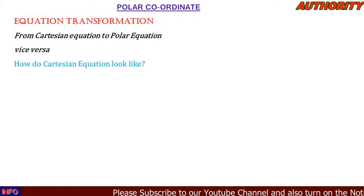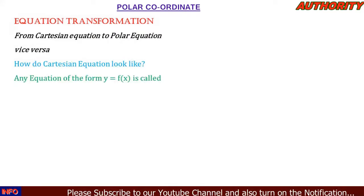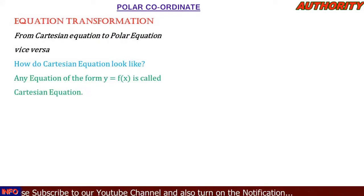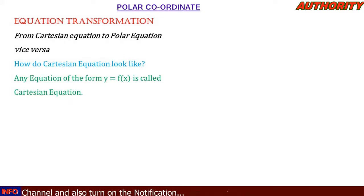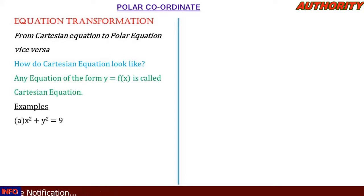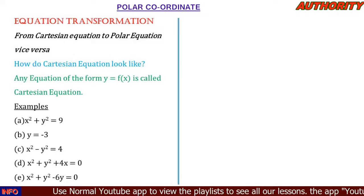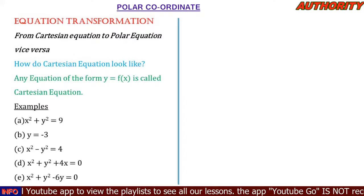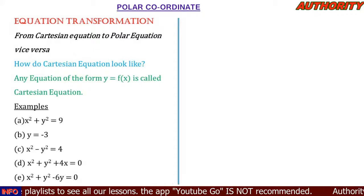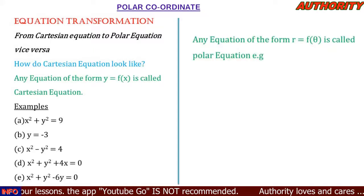Any equation of the form y = f(x) is called a Cartesian equation. For example: x² + y² = 9, y = −3, x² − y² = 4, x² + y² + 4x = 0, and x² + y² − 6y = 0 are all examples of Cartesian equations.